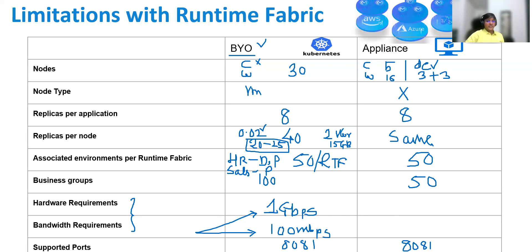Because of this connectivity and performance requirement, RTF won't support cross-regional deployment — it cannot deploy applications cross-region. That is not supported by RTF because of the network latency between each node, which can cause a lot of problems in your cluster.